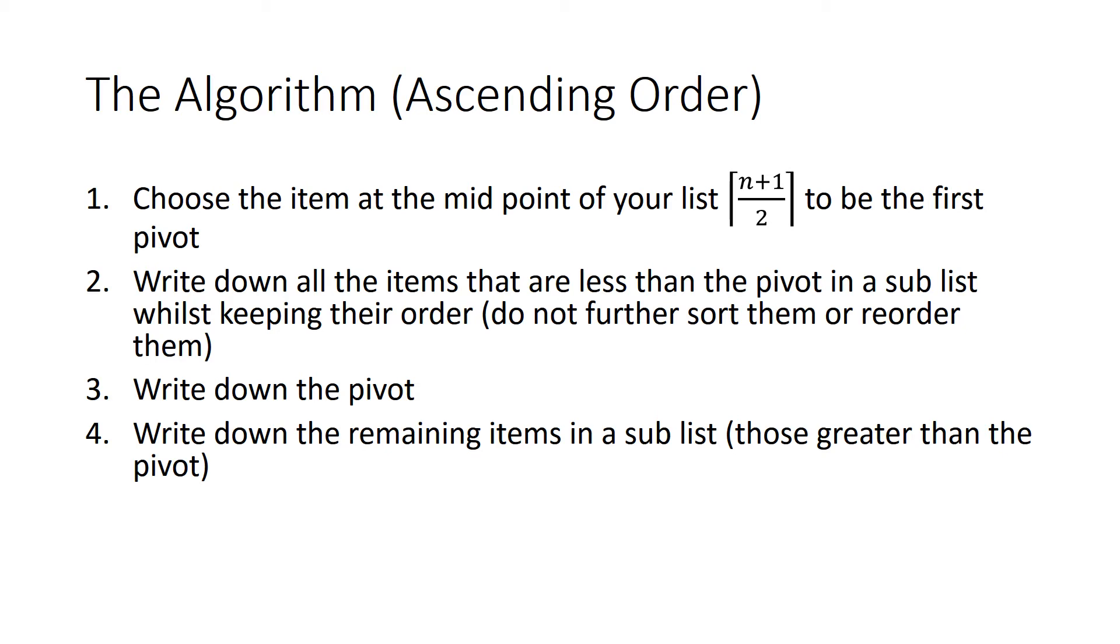Then you'll write down the pivot, and then you'll write down all the remaining items or those that are greater. If you're doing descending order you'll need to swap steps 2 and 4, so write down all the numbers that are bigger, then the pivot, and all the ones that are smaller.